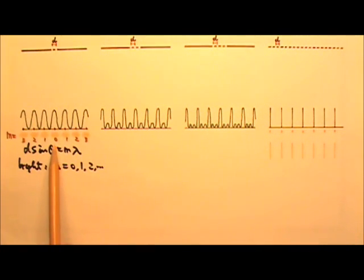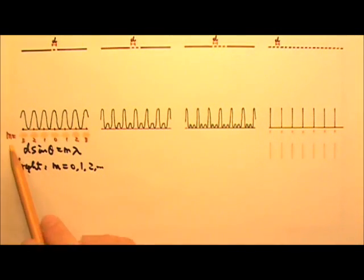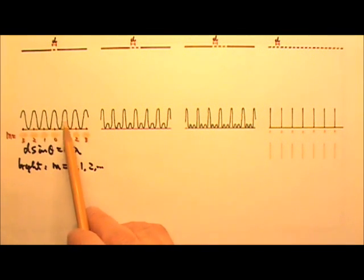So the bright fringe at the center of the screen is M equals 0, 0th order. And then the next ones will be first order, second order, third order bright fringes. And all these fringes have just about the same brightness.